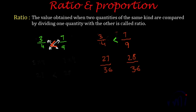A third method is to make the numerators the same and then compare the denominators — a bigger denominator means a smaller ratio. For 3:4 and 7:9, the LCM of 3 and 7 is 21. Multiplying: 3/4 becomes 21/28, and 7/9 becomes 21/27. Since 27 is smaller than 28, the fraction 21/27 is bigger, so the ratio 7:9 is bigger than 3:4.